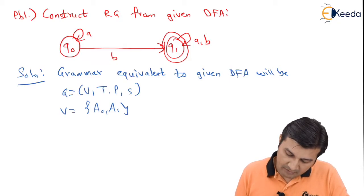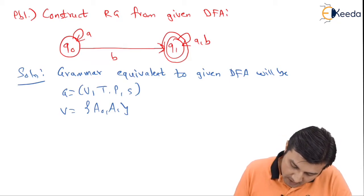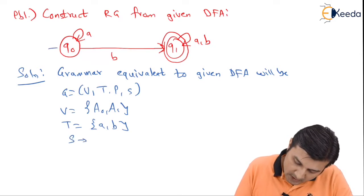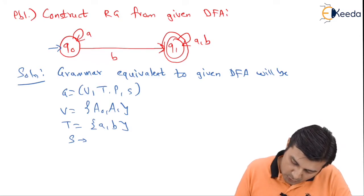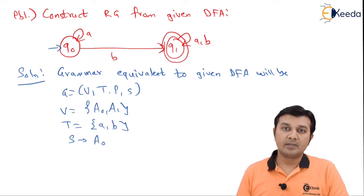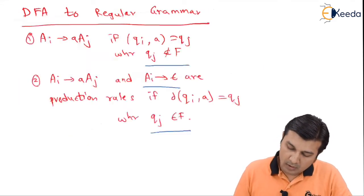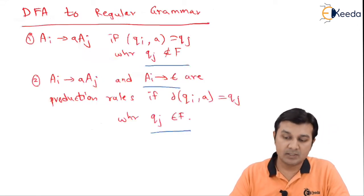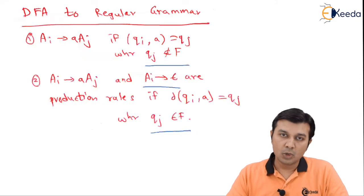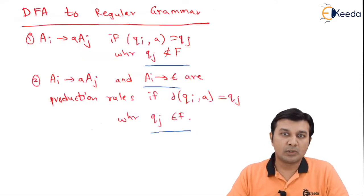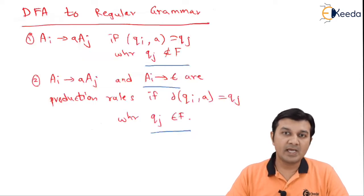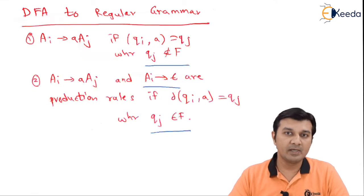With this renaming, the variable names are A0 and A1, the terminals are simply a and b, and since Q0 is the starting state, my start state is Q0, which is denoted by A0. Now looking at the rules: rule 2 applies when Qj belongs to the final state, and rule 1 applies when Qj does not belong to the final state. In this DFA, A0 is not the final state but A1 is the final state. So Qj for A0 will be non-final and Qj for A1 will be final.